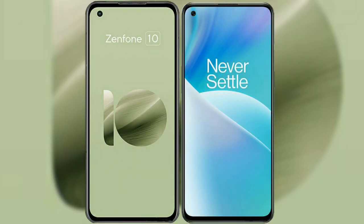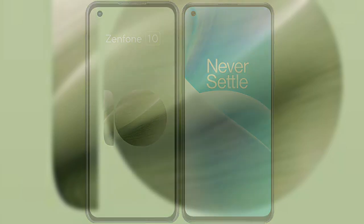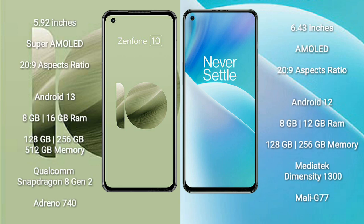I will compare the new Asus Zenfone 10 with the OnePlus Nord 2T. The Asus Zenfone 10 comes with a 5.92-inch Super AMOLED display and an aspect ratio of 20:9. The OnePlus Nord 2T comes with a 6.43-inch AMOLED display and an aspect ratio of 20:9.